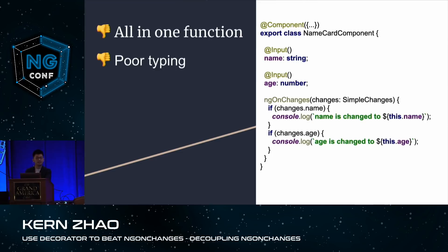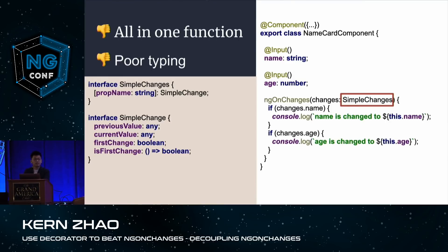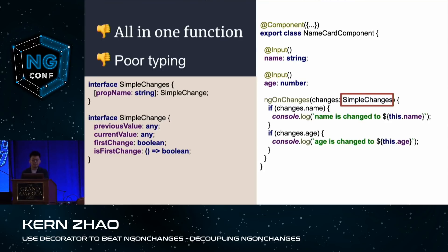The second issue is about poor typing. ngOnChanges takes in one parameter typed as SimpleChanges. The SimpleChanges object is defined by Angular, and its keys are any strings, which is problematic. Because if we have a typo — say changes.typoName — TypeScript won't recognize it or complain about it. This will fail silently.